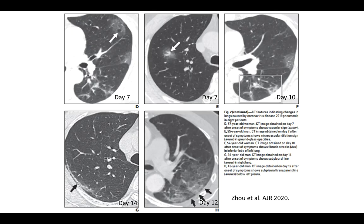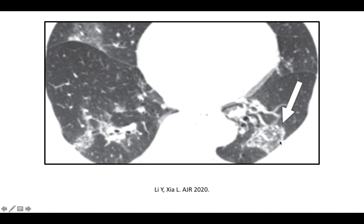Here are images from different patients in the later phase of infection. Along with ground glass opacities, septal thickening and early fibrosis can be seen developing. Subpleural linear opacities are also starting to develop in these cases, representing the resolving or organizing phase. We can also see the reverse halo sign — central lucency surrounded by opacity.